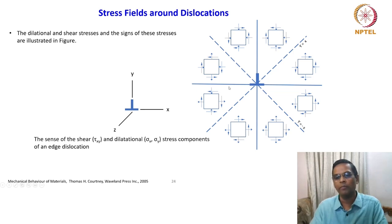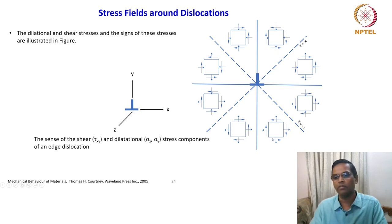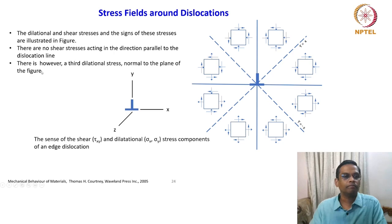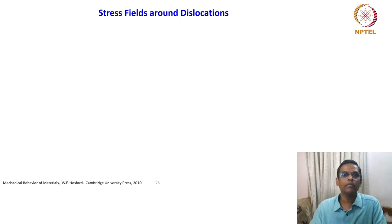In each quadrant, how is the dislocation going to behave — completely in tension or what kind of effect will it create on an external force or external object? Whether it is going to attract something or repel something — that will give you much more idea. There are no shear stresses acting in the direction parallel to the dislocation line. However, there is a third dilatational stress normal to the plane of the figure — there is no shear stress, but there is a normal stress.